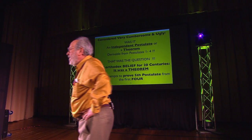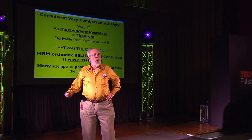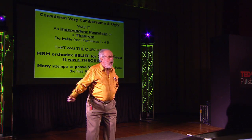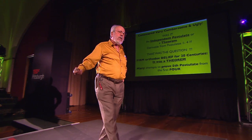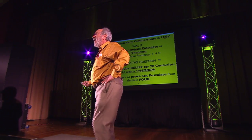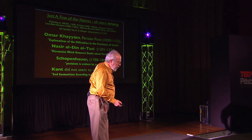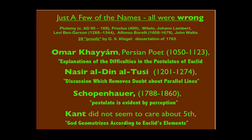There were many, many attempts to prove the fifth postulate. The attempts came from all countries, all sorts of different cultures. It was a remarkable history of attempts to prove the parallel postulate from the first four postulates. They were all wrong. Here are a few names, and I emphasize that each was wrong: Ptolemy and Proclus, Greek mathematicians; Witelo, a Polish mathematician; Johann Lambert, a Swiss mathematician; Levi Ben-Gerson, a Talmudic scholar from France; Borelli, Italian; John Wallis, English.